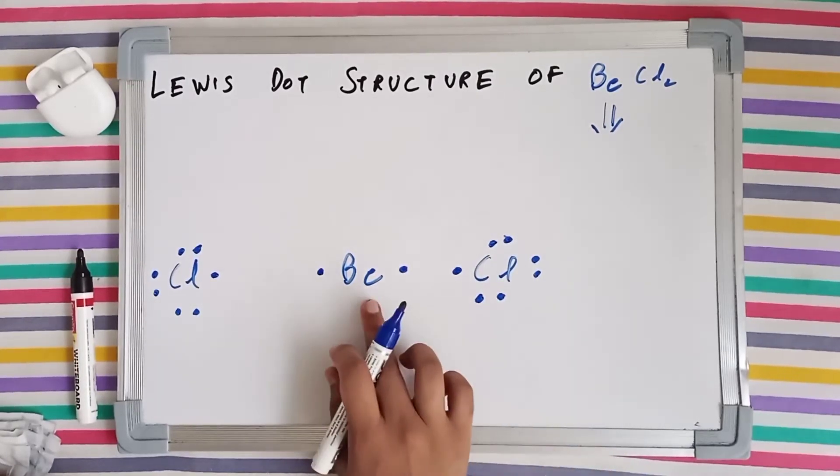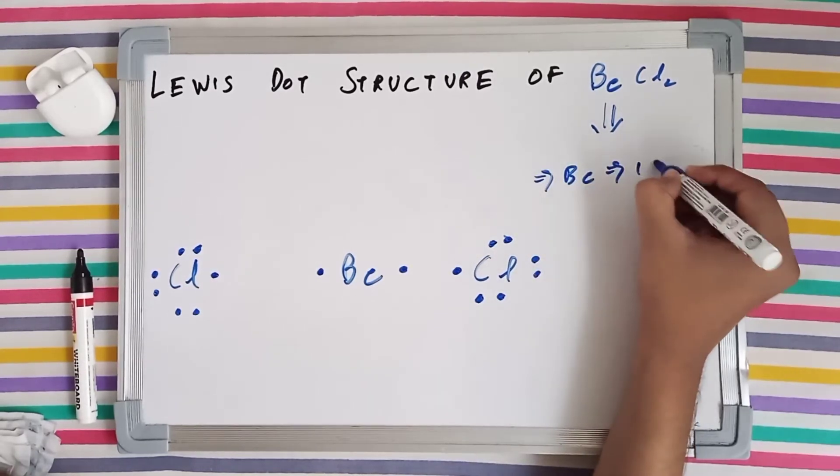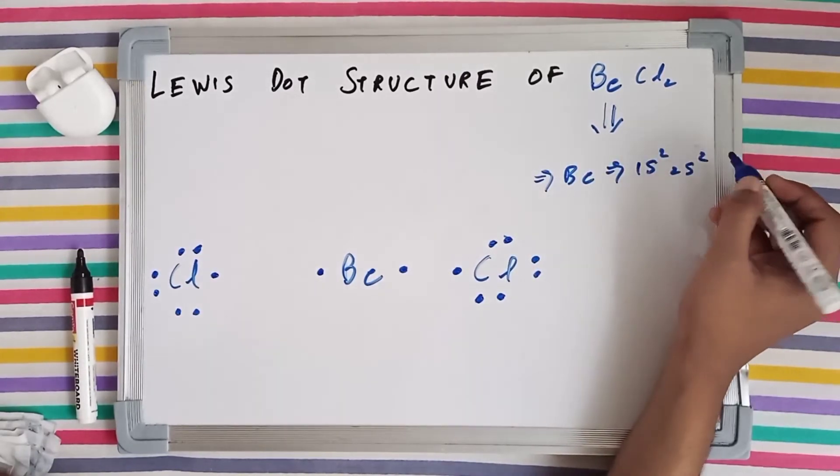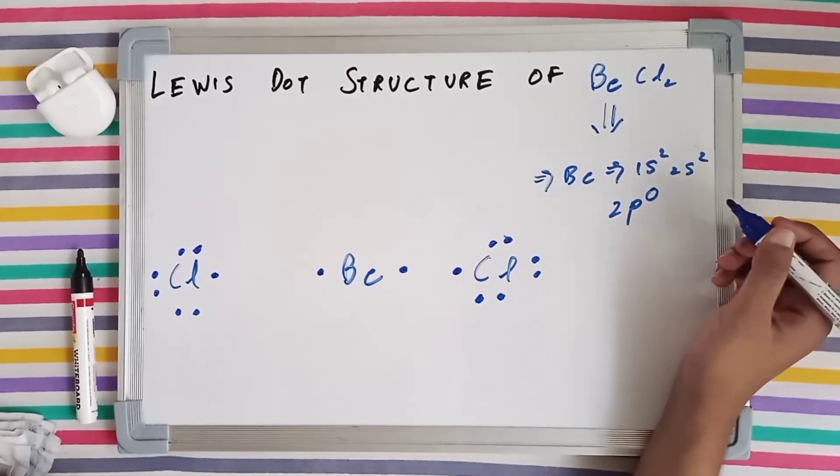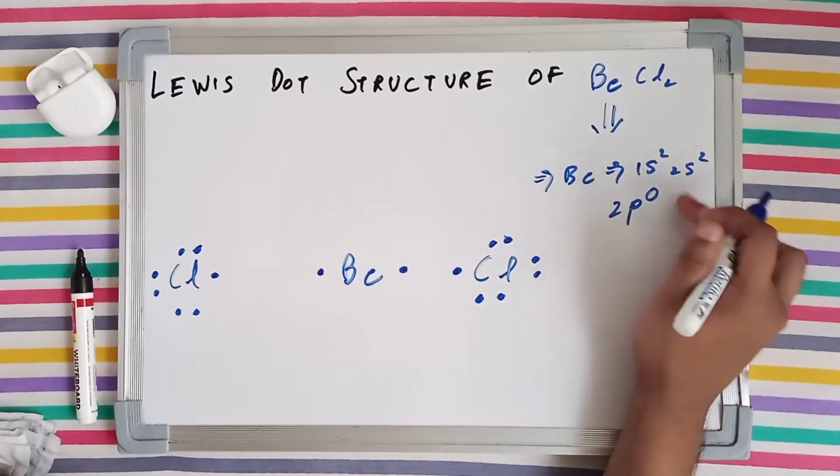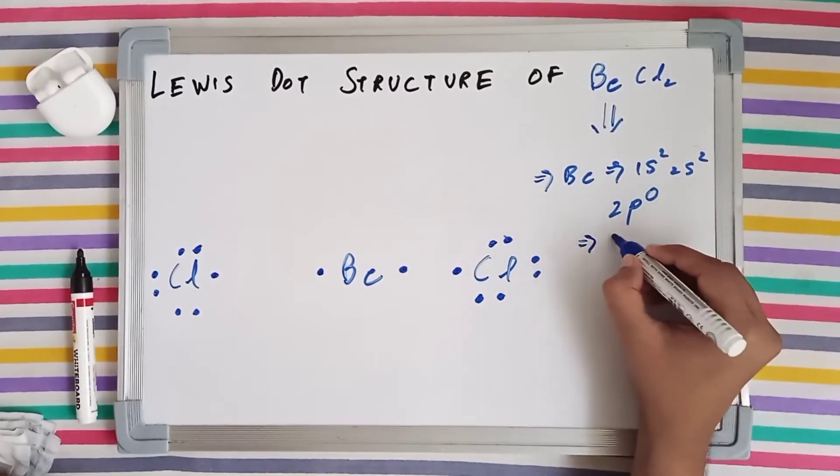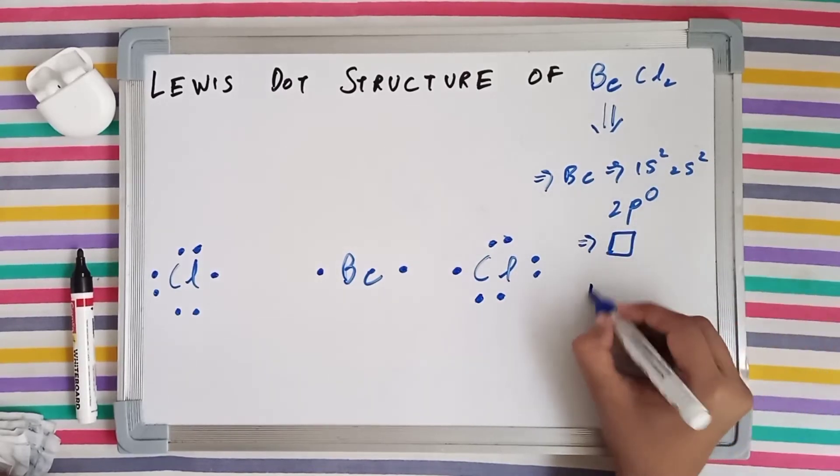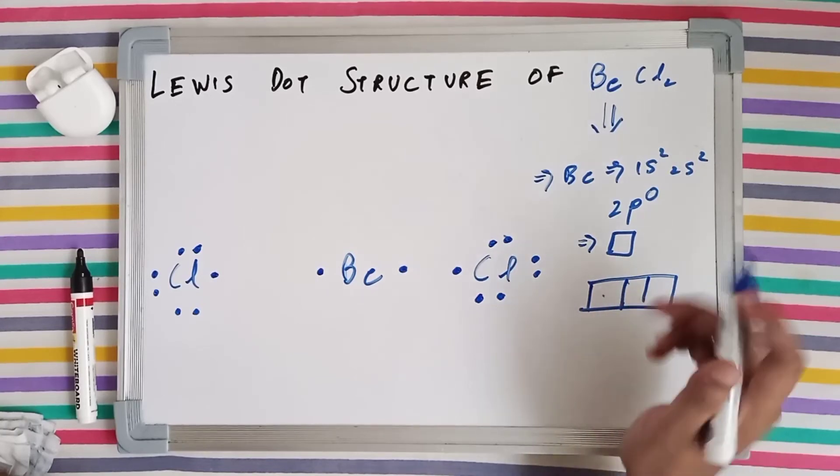So beryllium, see notice, I wrote the electronic configuration for beryllium as 1s2 2s2. But it has got a 2p subshell also, which is currently in non-bonded form, it is vacant. So what happens is that in beryllium, you've got the 2s subshell and you've got the 2p subshell having 3 orbitals.